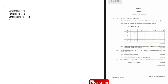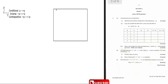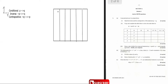The next part says: copy and complete the table to show the truth value for p implies q and not q implies not p. They're pretty much asking you to show that the conditional is logically equivalent to the contrapositive. The table has columns: p, q, not p, not q, p implies q, and not q implies not p.